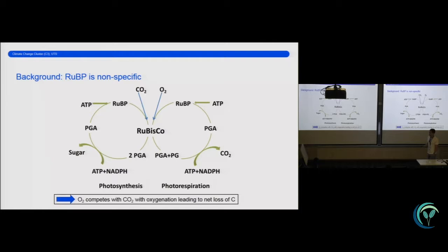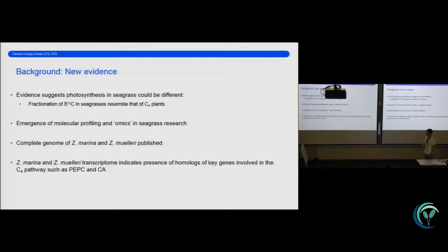Now, this is important, as ribulose bisphosphate is not specific. Essentially, ribulose bisphosphate can be both carboxylated or oxygenated. So when it is carboxylated, it leads to sugar production. However, when it is oxygenated, it leads to a loss of carbon and is energy costing for the plant.